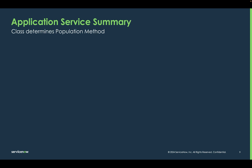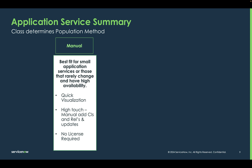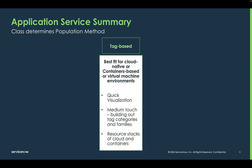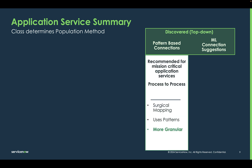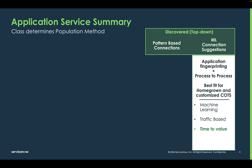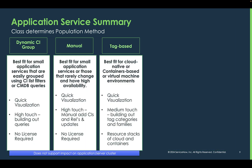Now let's look at a summary of application services. Recall that a class determines your population method. In part one, we're going to look at dynamic CI groups. Part two, we're going to look at manual mapping. In part three, we're going to look at how tags from our cloud or on-premise virtual environment can be used to visualize service maps. Part four is going to look at discovered or top-down applications and focus on pattern-based connections. And in part five, we're going to leverage machine learning and use connection suggestions. You can use both connection practices in the same application service. Another point: dynamic CI groups, manual services, and tag-based services do not create clusters and do not support cluster impact.